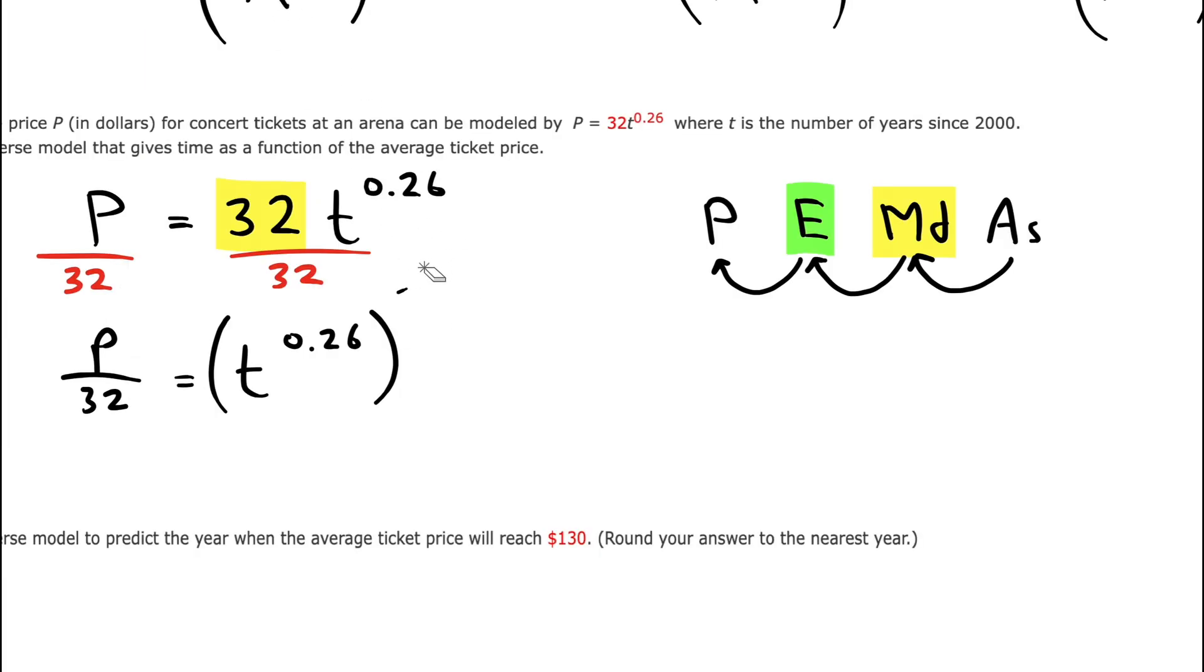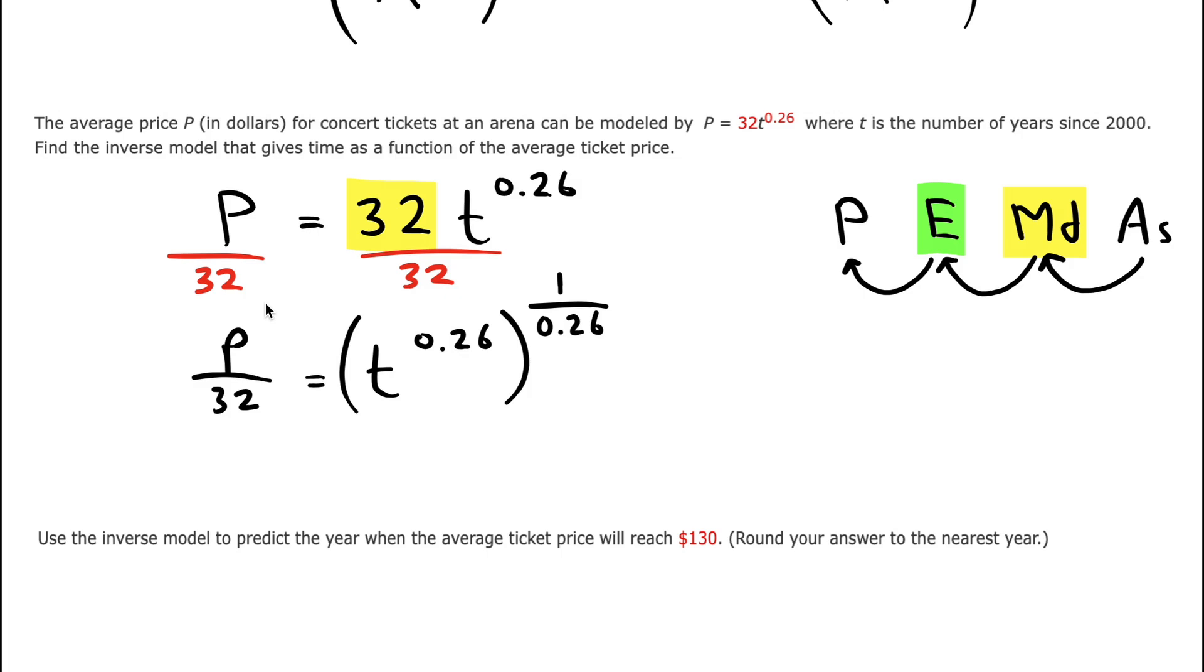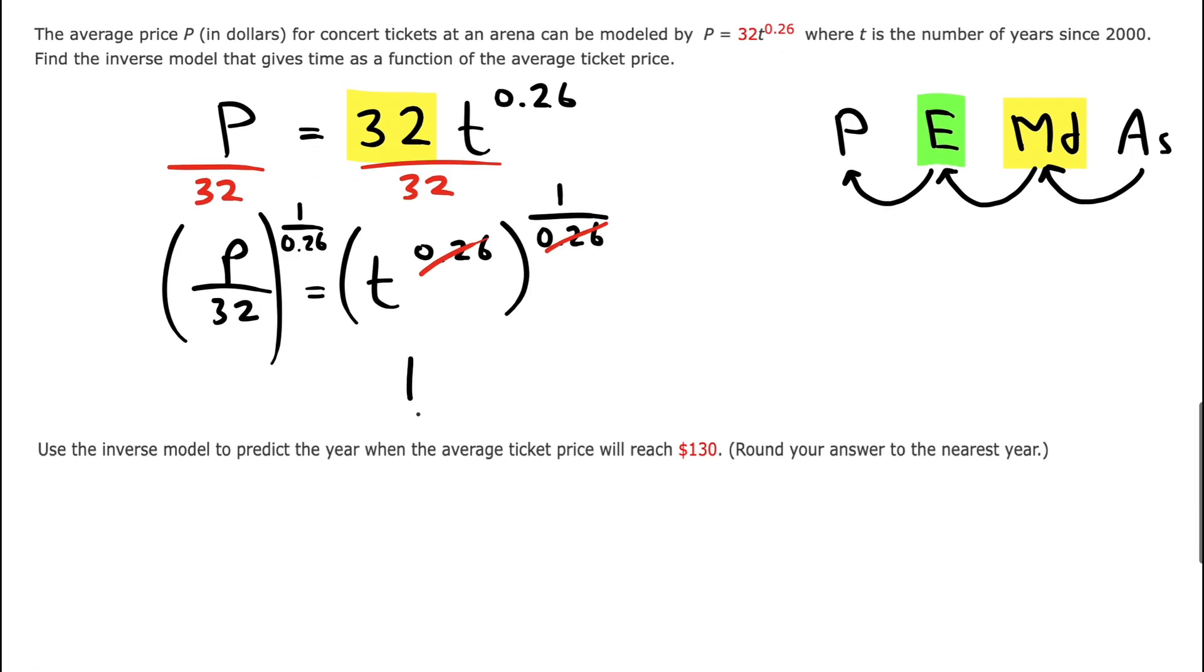So what we want to do then is raise the 0.26 power to a power of 1 over 0.26. To make it fair, we have to do it to both sides. Then the exponent will be canceled on the right, and we'll have our inverse function.